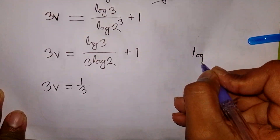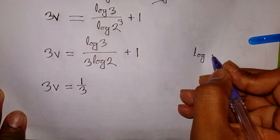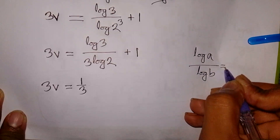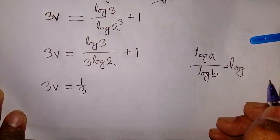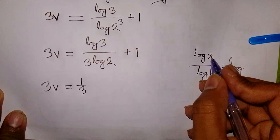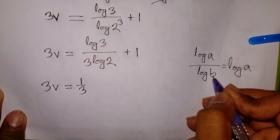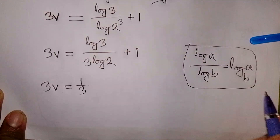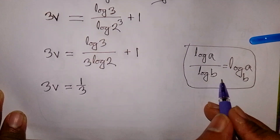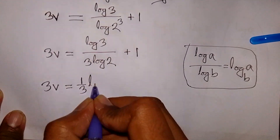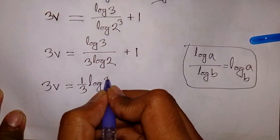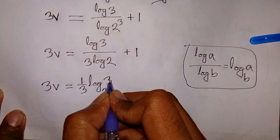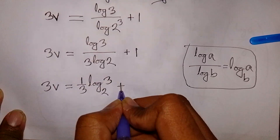We apply the formula: log A over log B is equal to log A base B. So log 3 over log 2 is equal to log base 2 of 3. Therefore, 3V is equal to one-third times log base 2 of 3, plus 1.